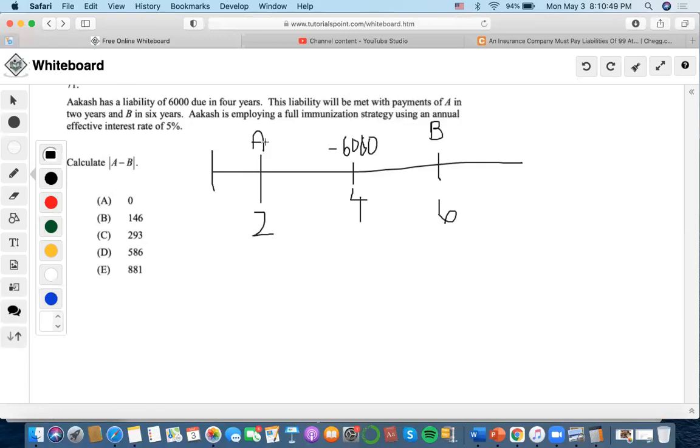So this looks like a full immunization problem, liability sandwiched in between two assets. Adcash is employing using an effective rate of 5%. So we want to find out what these payments are.